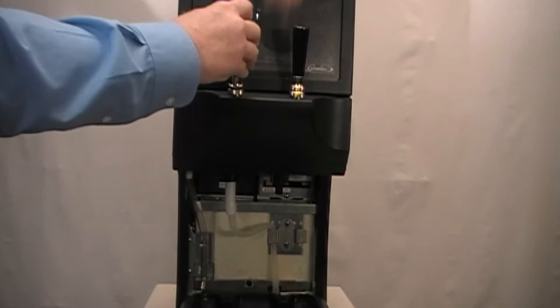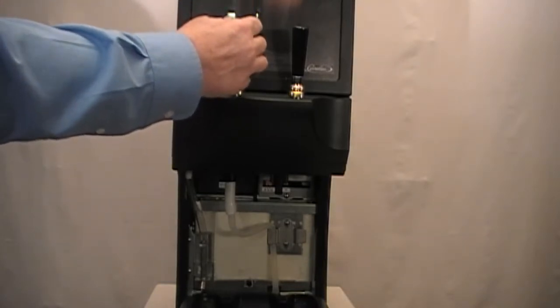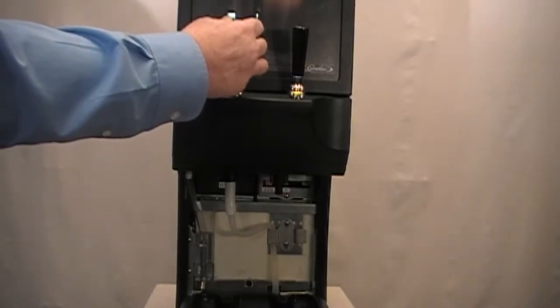Pull the left side dispense handle in one minute increments and allow dispense water from the nozzle to fill the water bath tank. Continue to fill the tank until water starts to flow out the overflow tube located in the bottom center of the tank.